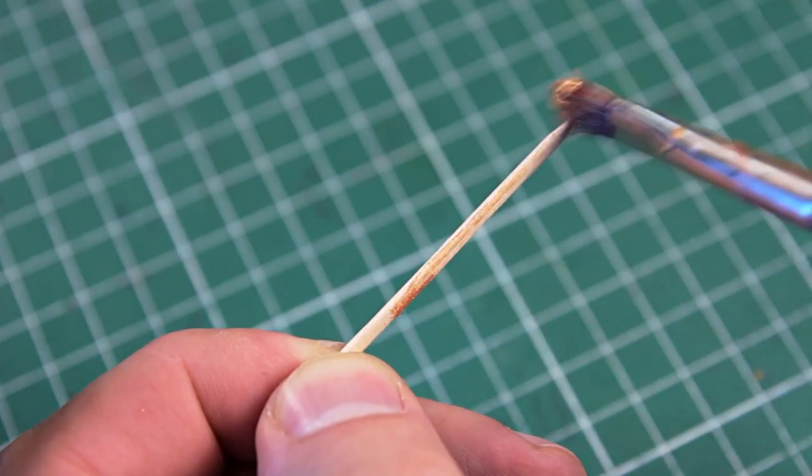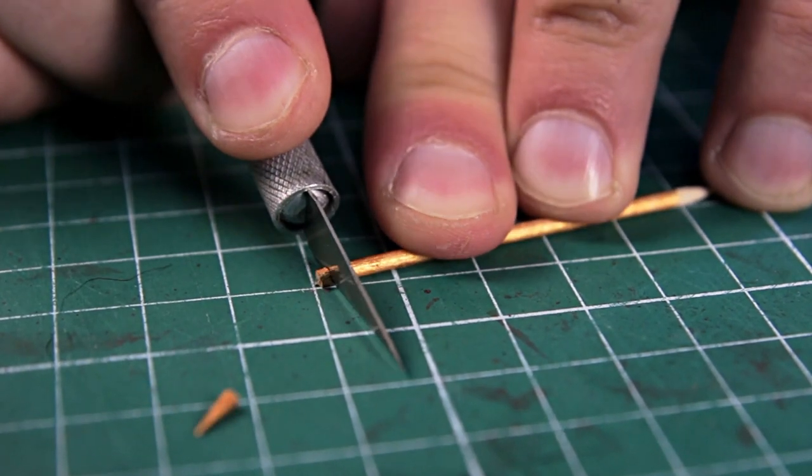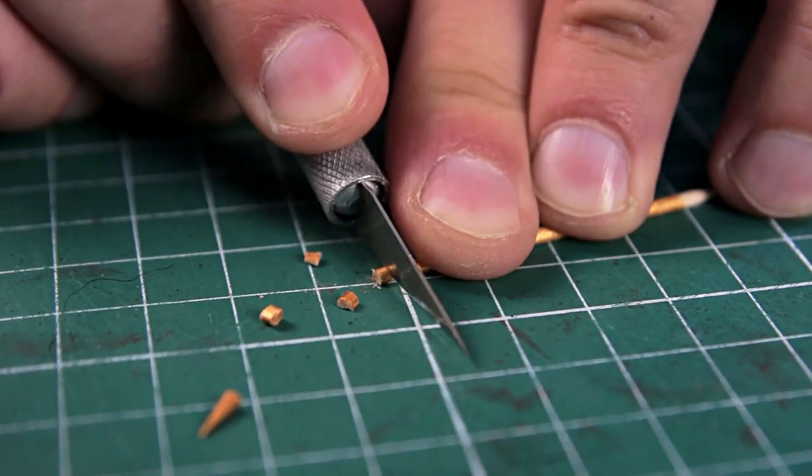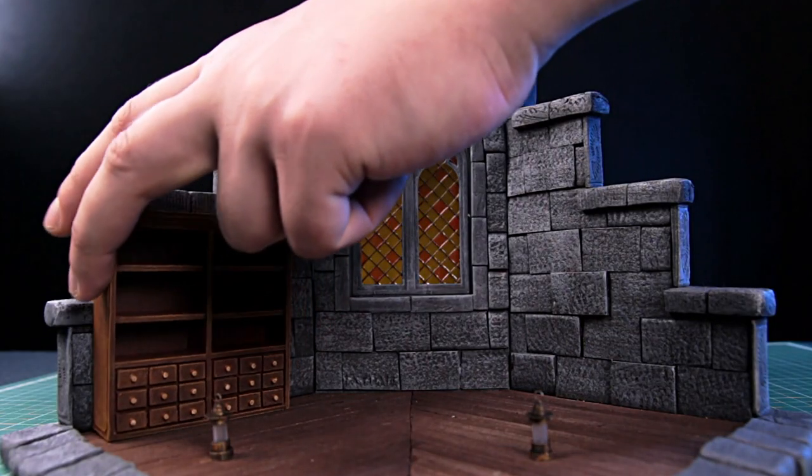I'll make the handles for the drawers out of a toothpick. Just coat it with gold paint, cut all the pieces and glue them up. I'll put everything in its place.